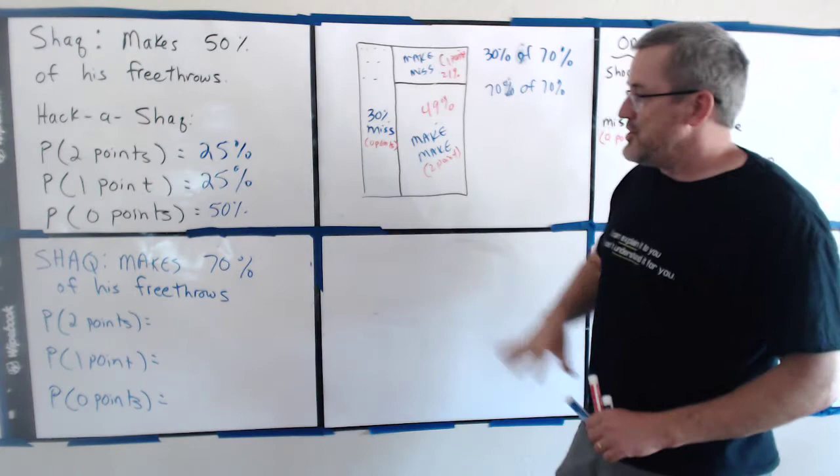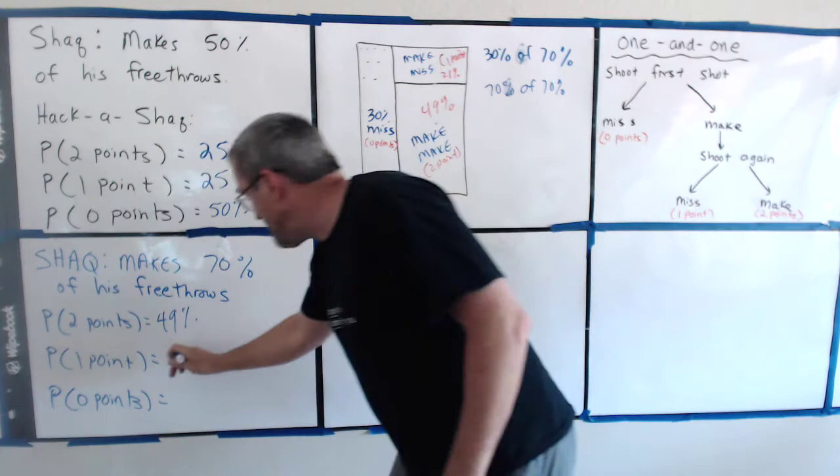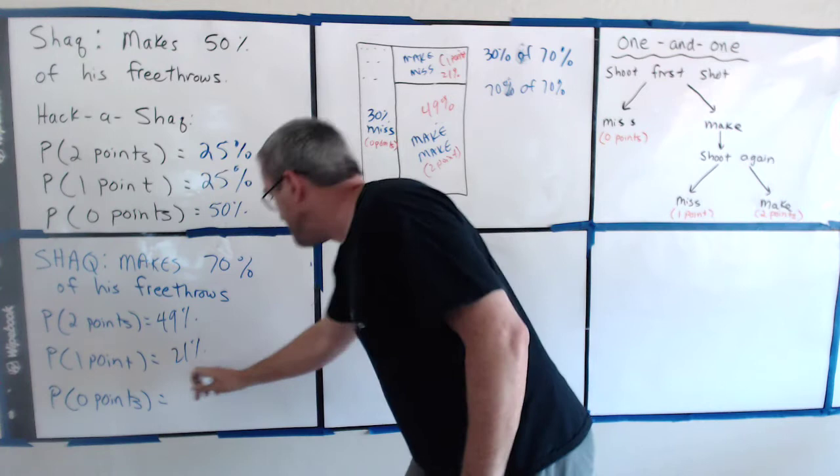49% of the time, he's going to now get 2 points. Probability of 1 point, 21% of the time. And probability of no points, 30% of the time.